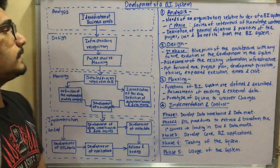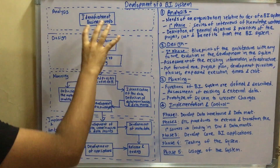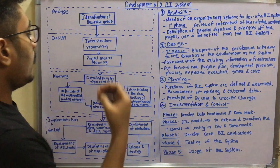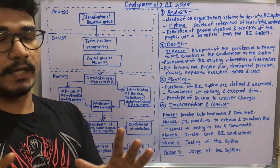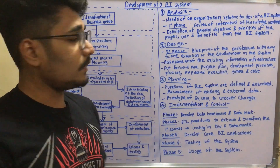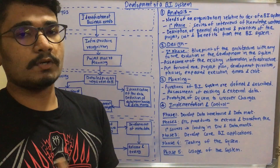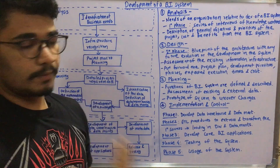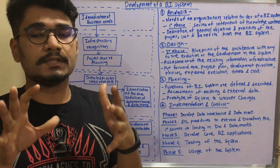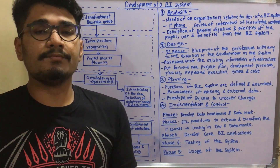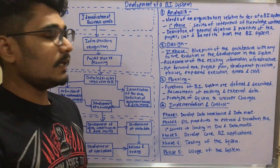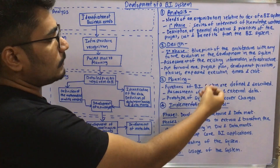Next is the design phase, which involves two blocks: infrastructure recognition and project macro planning. Infrastructure recognition means identifying the underlying or previous infrastructures used. Project macro planning is a blueprint or overview of the design phase — an architecture blueprint accounting for future evolution, such as any database migrations. You also assess the existing information infrastructure. The outcome is a project plan with development priorities, phases, and expected execution time and cost of each module.